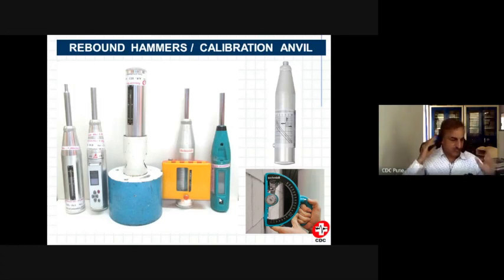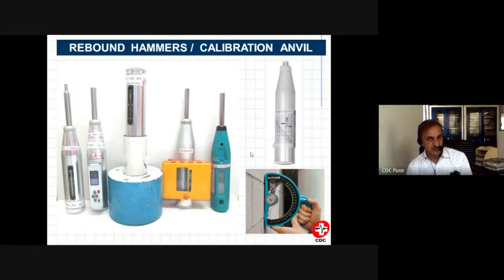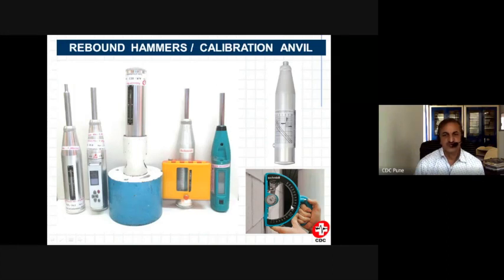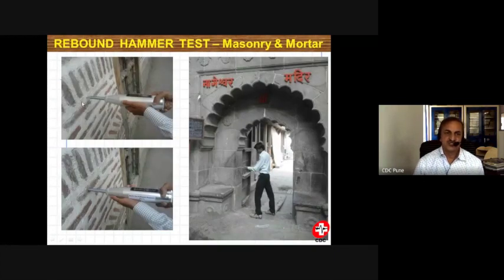There are different types of rebound hammers used for non-destructive testing with different impact energies. Rebound hammers for concrete are different from those for bricks, and those for mortars are different again. The appropriate hammer must be selected for each material. Rebound hammers can be used on timber columns, masonry mortar, bricks, stone masonry, and masonry joints.